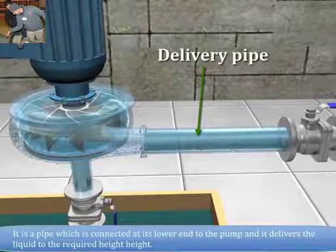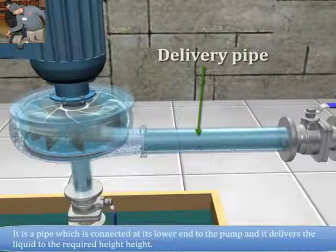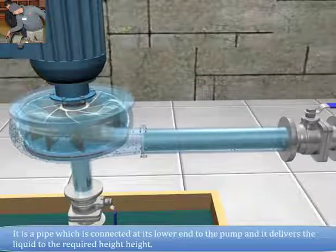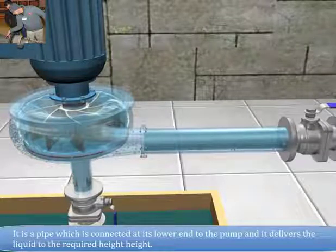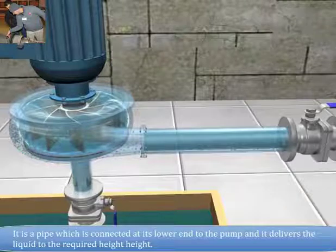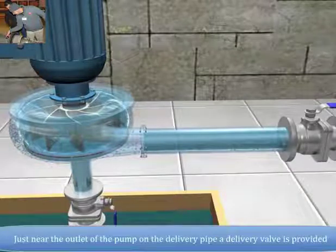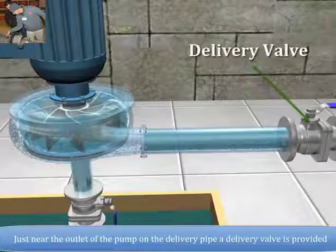Delivery pipe. It is a pipe which is connected at its lower end to the pump and it delivers the liquid to the required height. Just near the outlet of the pump on the delivery pipe a delivery valve is provided.